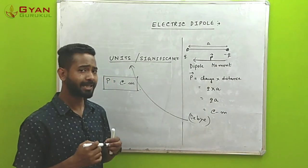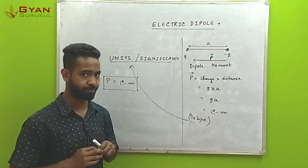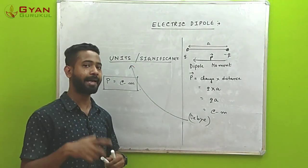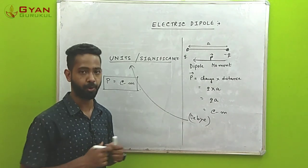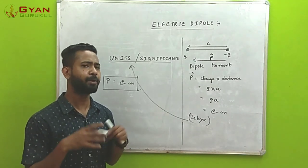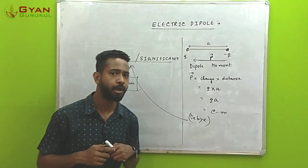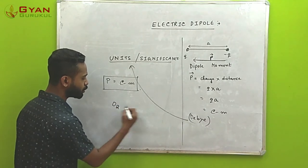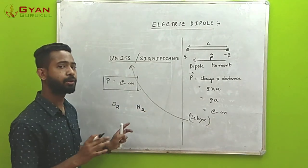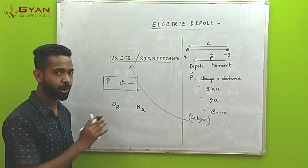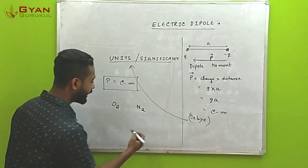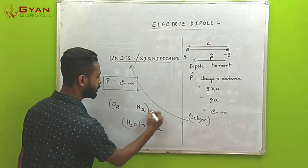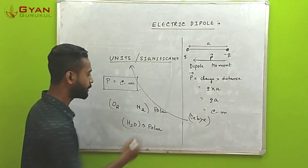The physical significance of dipole moment is to determine whether molecules are polar or non-polar — a concept from chemistry that we can discuss here. For example, homonuclear molecules such as O2 and N2 are non-polar in nature, while a molecule like H2O is a polar molecule.